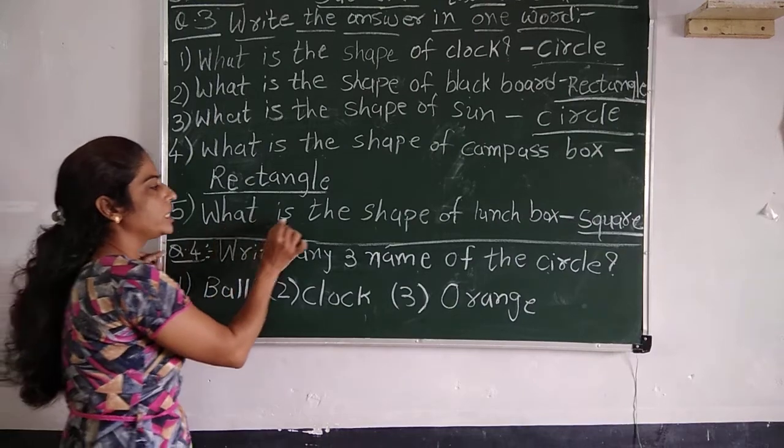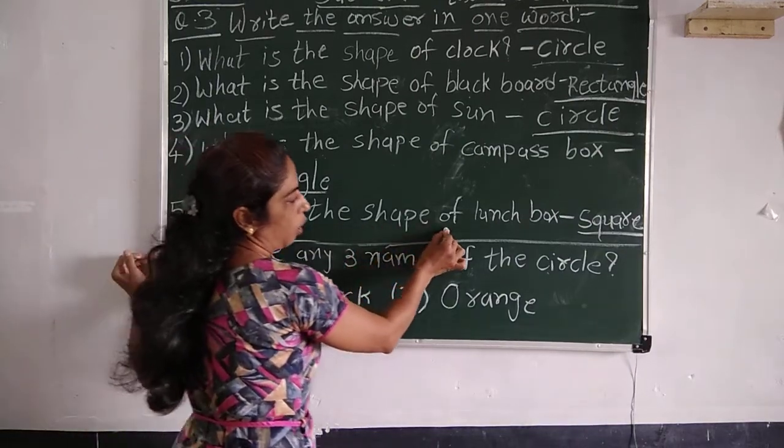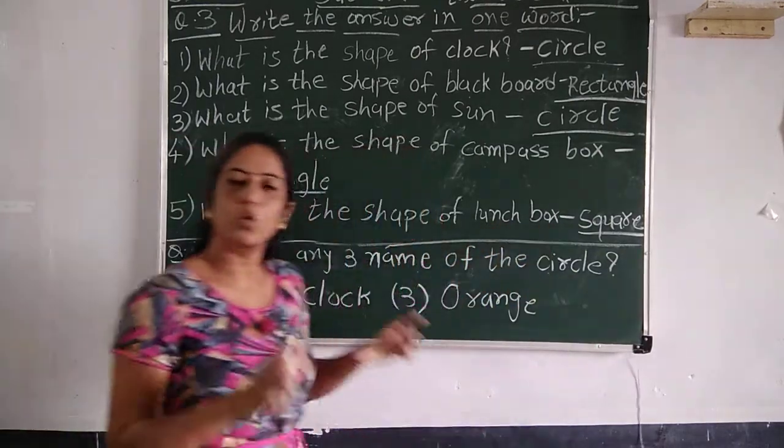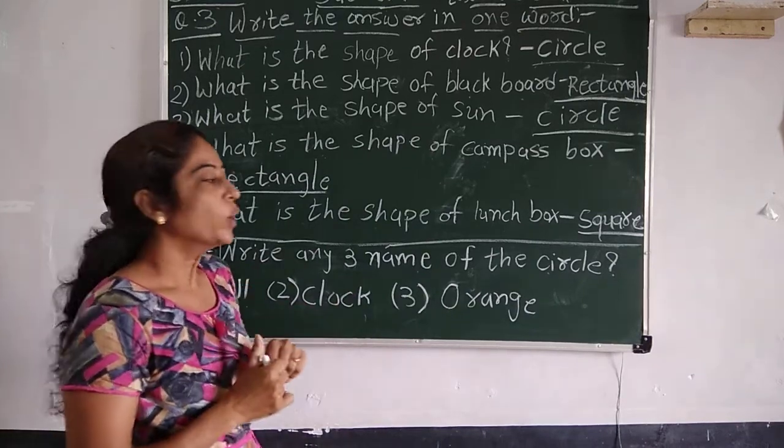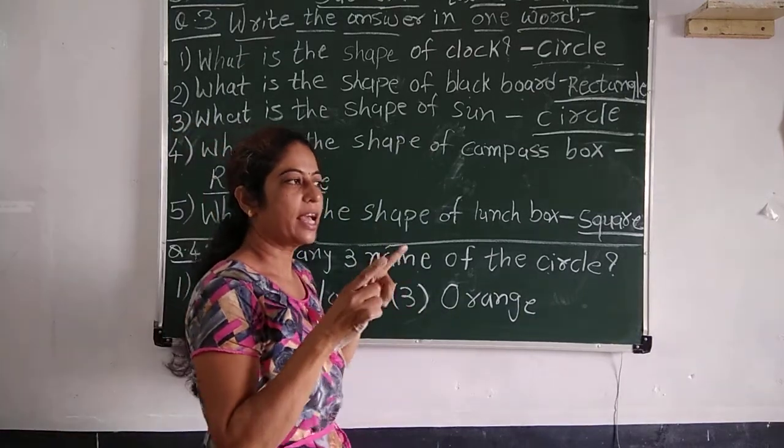Then the fifth number is what is the shape of lunch box. If you have lunch box, you can see the shape of the box. The shape is square.